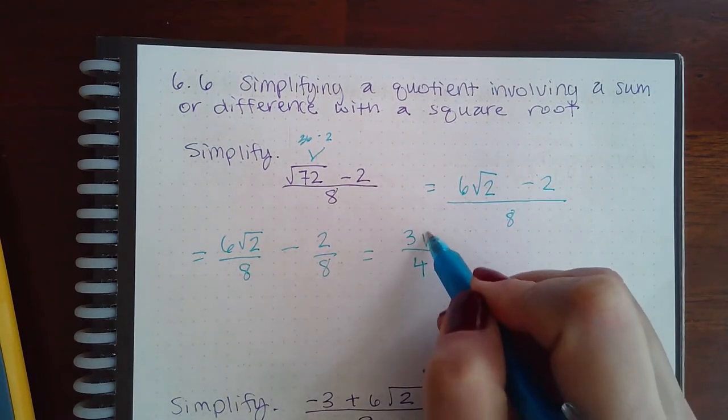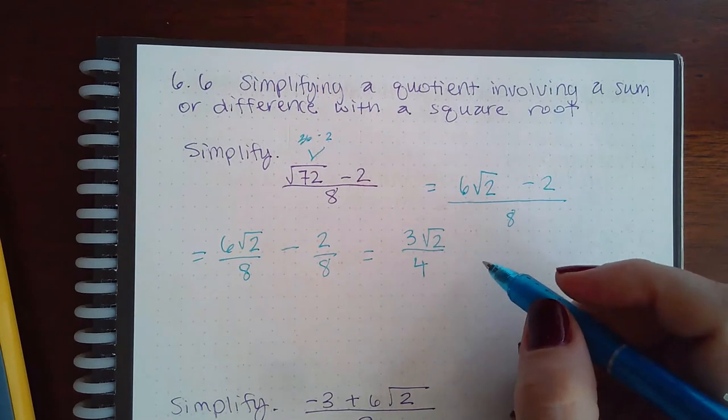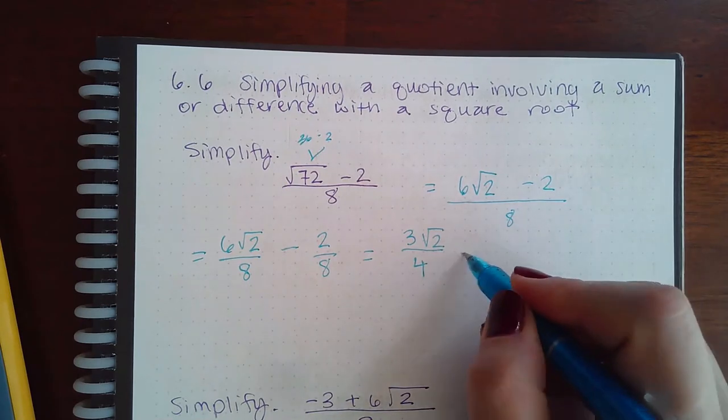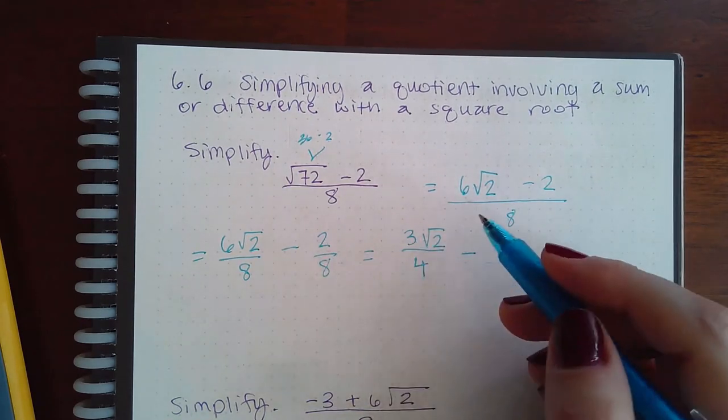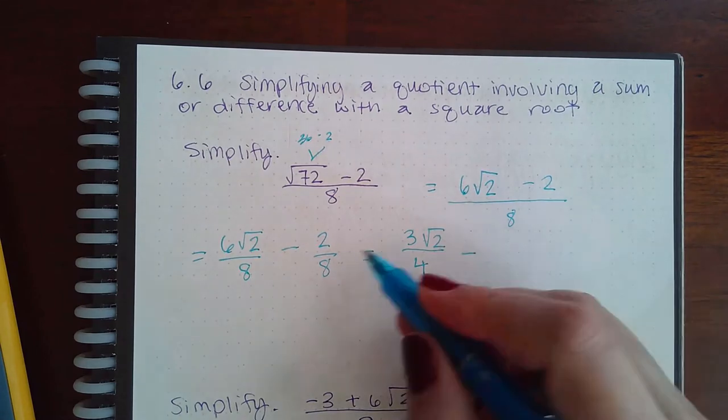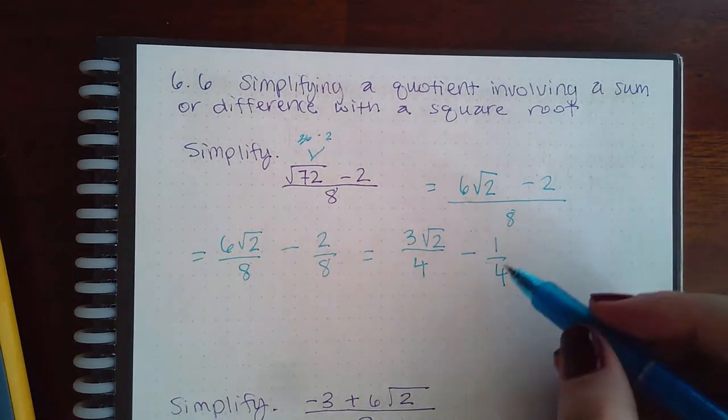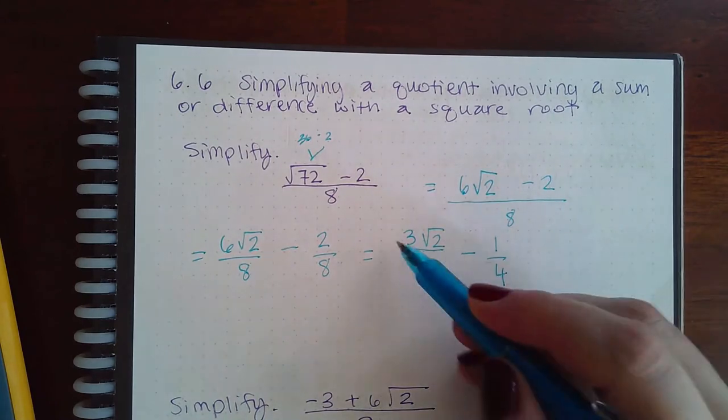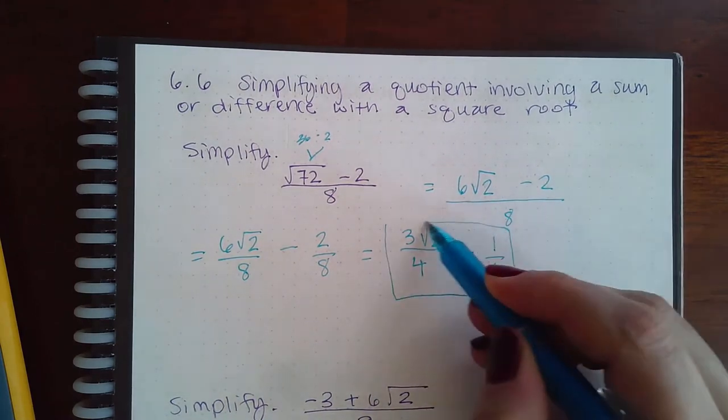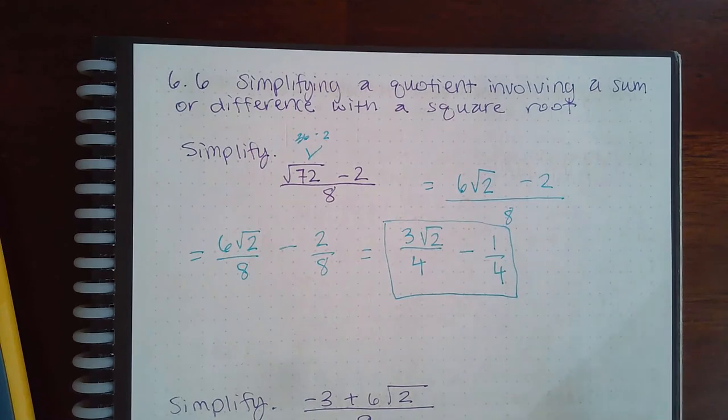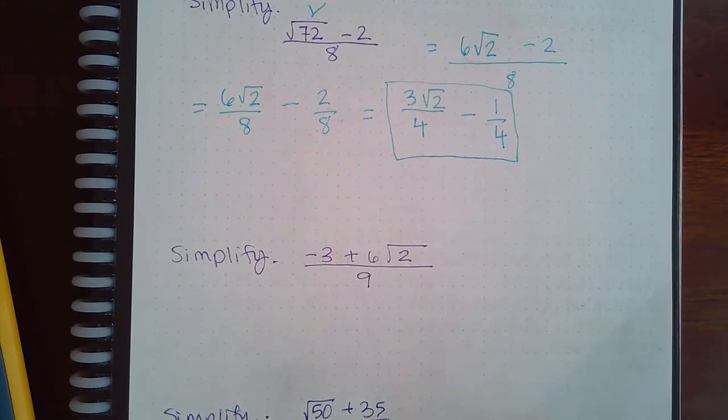Then here we can reduce these two numbers by 2, so we'll get 1 and 4. You could put it back as a single fraction again, but you could also type this into ALEKS and it will accept that as the final reduced answer.